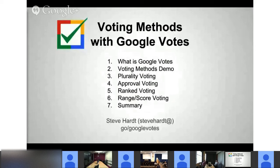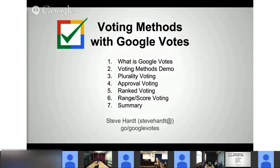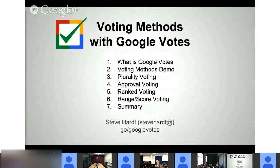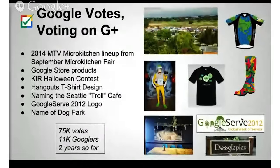Hello. My name's Steve Hart. This Tech Talk is voting methods with Google Votes. I'm going to give an introduction to social choice theory, which is all about how groups make decisions — the different methods people can use to vote and to aggregate those votes, both the methods and the algorithms. I'll go through a number of common voting methods and algorithms and talk about some of their idiosyncrasies, using the Google Votes voting platform as the example.